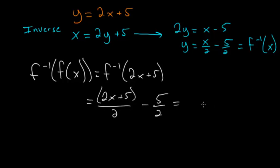And now if we simplify, we know that the denominator is 2 in each of these. And we have 2x plus 5 minus 5, and we're left with 2x over 2, and the 2's cancel, so that we're left with x.